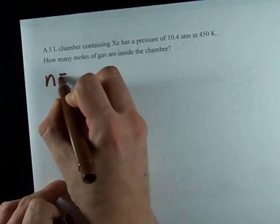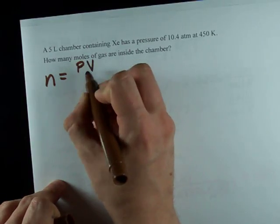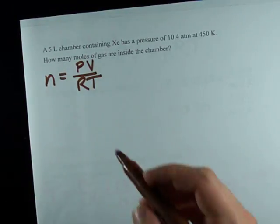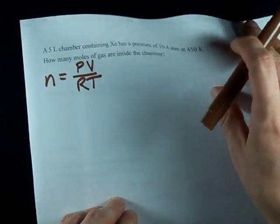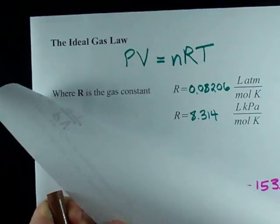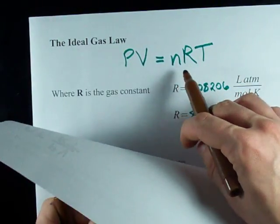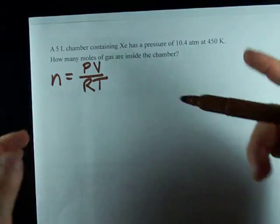Well, to solve for N, I'm going to take my pressure and volume and divide by RT. The way I undo multiplying by RT is to divide RT on the other side. Nice.